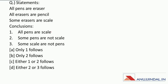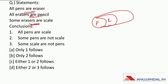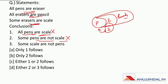Next question: All pens are erasers, all erasers are pencils, and some erasers are scale. All pens are erasers, all erasers are pencils, and some erasers are scale. Now let us check the conclusions: all pens are scale — no direct relation between pen and scale — incorrect. Some pens are not scale — no direct relation — incorrect. Some scale are not pens — no direct relation — all conclusions are incorrect.